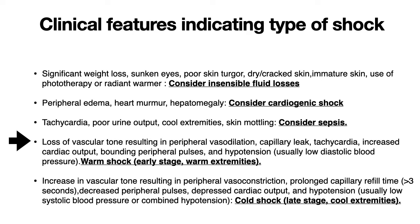If the neonate presents with loss of vascular tone resulting in peripheral vasodilation, capillary leak, tachycardia, increased cardiac output, bounding peripheral pulses, and hypotension — usually low diastolic blood pressure — then consider warm shock. Increased vascular tone resulting in peripheral vasoconstriction, prolonged capillary refill time, decreased peripheral pulses, depressed cardiac output, and hypotension — usually low systolic blood pressure or combined hypotension — should be considered for cold shock.